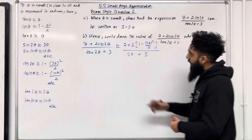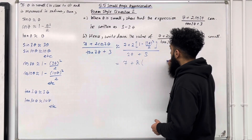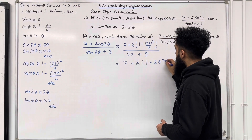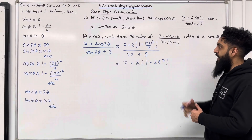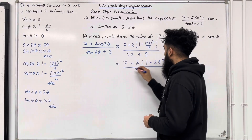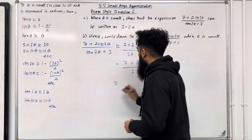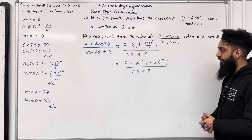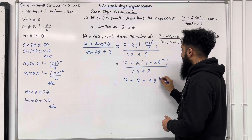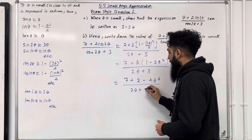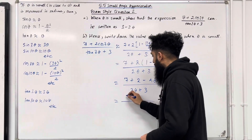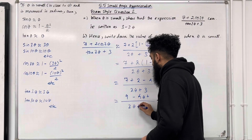Expanding gives 7 plus 2(1 minus 2θ²) all over 2θ plus 3. The numerator becomes 7 plus 2 minus 4θ², which simplifies to 9 minus 4θ², all over 2θ plus 3. This is a difference of two squares: 3² minus (2θ)², which factorises to (3 - 2θ)(3 + 2θ) all over (2θ + 3).